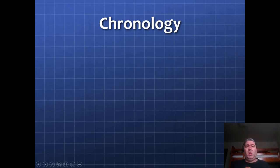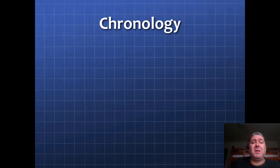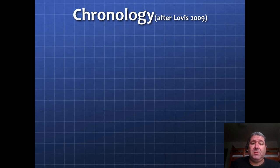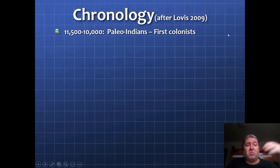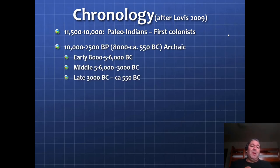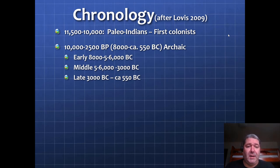So in part two here, we'll talk all about the chronology of the first tribes or Native American tribes around the Great Lakes region. So here's a chronology. This was developed after Levis in 2009. 11,000 to around 10,000 Paleo-Indian colonies — these are our first evidence of colonists, this probably goes back a little farther. But 10,000 to about 2,500 years before present, which is 8,000 BC or 8,000 to 550 BC.